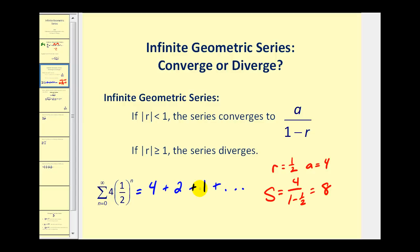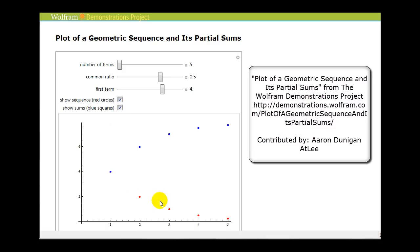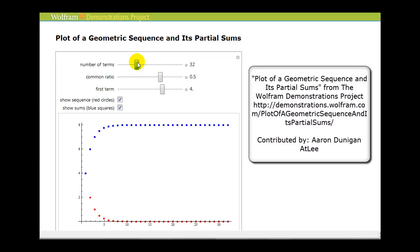Let's look at this graphically to better understand why the absolute value of r must be less than one. The graph shows the terms of the geometric series we just considered. The first term was four, our common ratio was one-half, so four times one-half equals two, two times one-half equals one, and so on. To determine if a series converges, we must consider the partial sums, shown here in blue alongside the terms in red. As we increase the number of terms, you can see very quickly that the partial sums converge to eight, as shown on the y-axis.